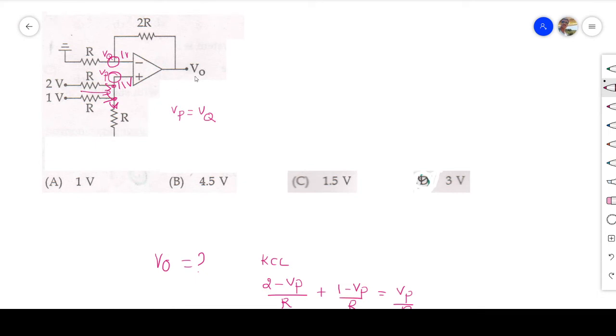V_O, how to find V_O? In order to find V_O, I do one thing. I apply KCL again here. The input voltage is 0 volt here. So 0 minus 1 divided by R is equal to 1 minus V_O divided by 2R. R R cancel. This implies 1 minus V_O by 2 is equal to minus 1. This implies V_O is equal to 3 volt. Option D is the right answer. Simple one.